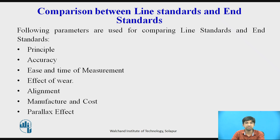The following parameters are used for comparing Line Standards and End Standards: Principle, Accuracy, Ease and Time of Measurement, Effect of Wear, Alignment, Manufacturing Cost, and Parallax Effect. Now let us see the difference between them.